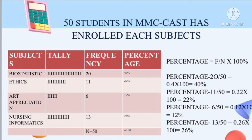Next, 11 divided by 50 equals 0.22, times 100% equals 22%, meaning out of 50 students, 22% enrolled in art appreciation. Finally, 13 divided by 50 equals 0.26, times 100% equals 26%. After we get all the percentages, we should make sure they total 100% by adding all the answers.